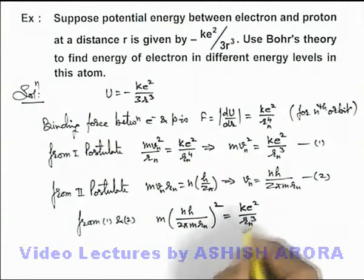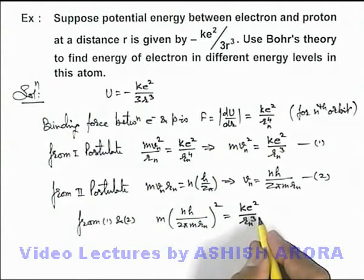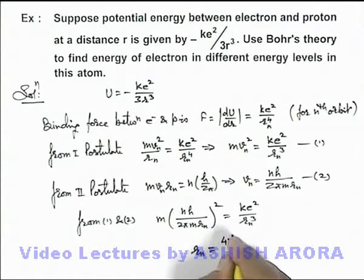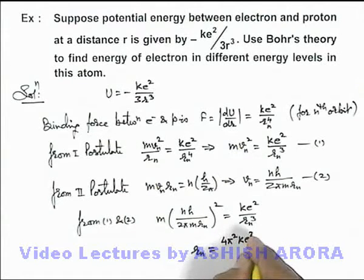In this situation, r n square will get cancelled out with the cube. On simplifying, we get the value of r n as 4 pi square k e square m over n square h square. Now let's continue on the next sheet.